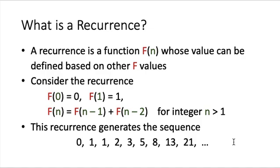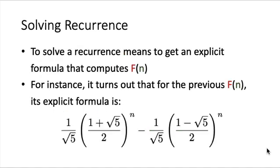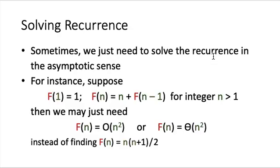This is the so-called Fibonacci sequence. To solve a recurrence means that we want to get an explicit formula that computes f of n directly, rather than finding f of n one by one using older values. For the Fibonacci recurrence, it turns out there is an explicit formula — it is rather complicated, but we can show it is correct: plugging in n=0 gives 0, n=1 gives 1, and in general it computes f of n. However, for this course we will solve recurrences only in the asymptotic sense.